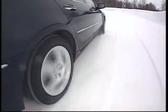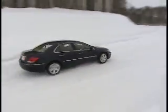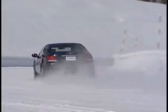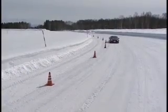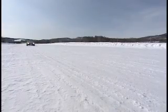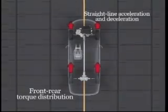SHAWD delivers these same benefits on snow, wet roads, and other challenging surfaces. Here, the vehicle is accelerating in a curve — extra torque is delivered to the outside rear wheel to suppress understeer. During straight-line driving as well, SHAWD controls torque distribution to the wheels in accordance with tyre load for maximum driving efficiency.